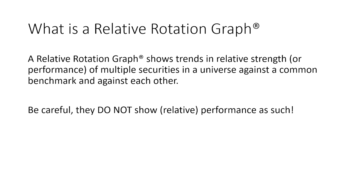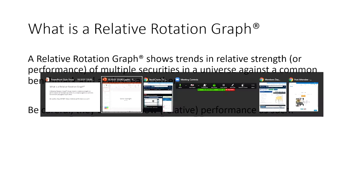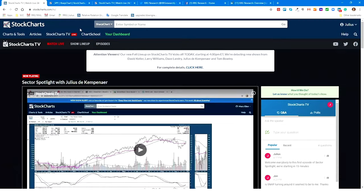Going to some of the basics: what is a Relative Rotation Graph? A Relative Rotation Graph shows you trends in relative strength or performance of multiple securities in a universe against a common benchmark and against each other. The most important thing to be aware of is that they do not show relative performance as such — that would jump around the screen way too much. What an RRG does is show you trends in relative performance. To back that up, I'm going to bring in some charts. Let's bring up XLU because that sector is doing really, really well at the moment.